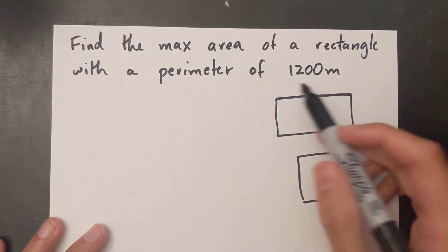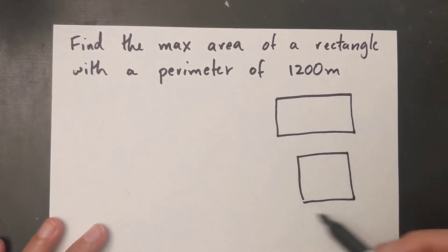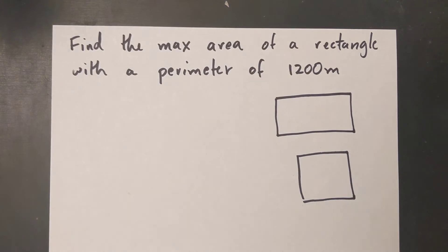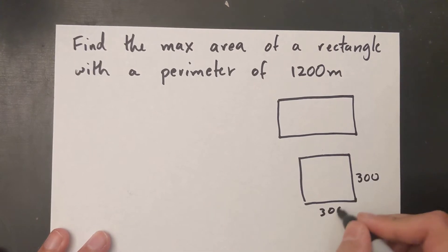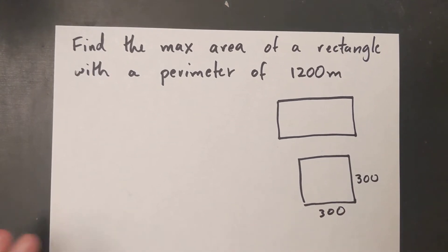So for my square all four sides have the exact same width, so it's just 1200 divided by 4, which is basically 300. Okay, so this is how max area can be estimated or kind of you can tell it, but we want to know how to prove this algebraically.